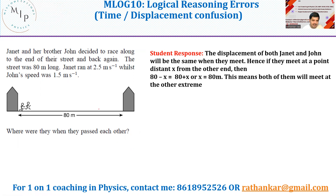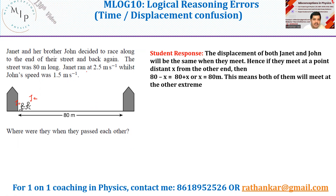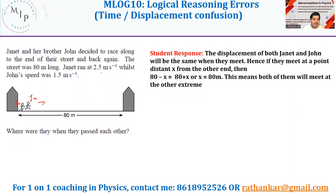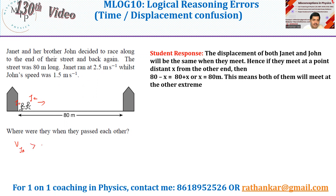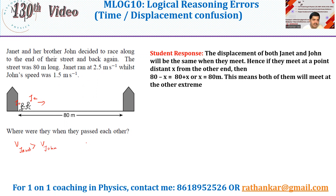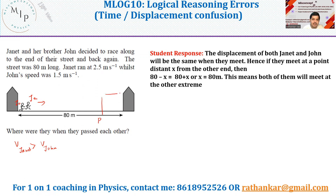The student worked it out like this: Janet (J-A) has a higher speed of 2.5 meters per second, John (J-N) has 1.5 meters per second, so v of Janet is larger than v of John. He assumed they meet at a point P which is at a distance x from the starting point.